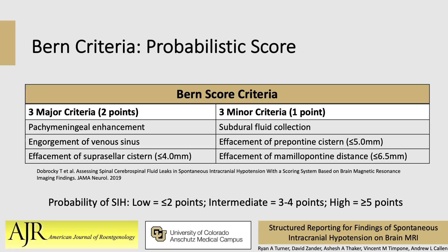The burn score is a set of criteria that was developed using these findings. They found that the burn score demonstrated good discriminative power in the assessment of CSF leaks in SIH. As you can see in the table, major criteria are awarded two points and minor criteria one point. When using the burn score for assessment, a low probability is a score of less than or equal to two, intermediate is three to four, and high probability is a score of five or greater.